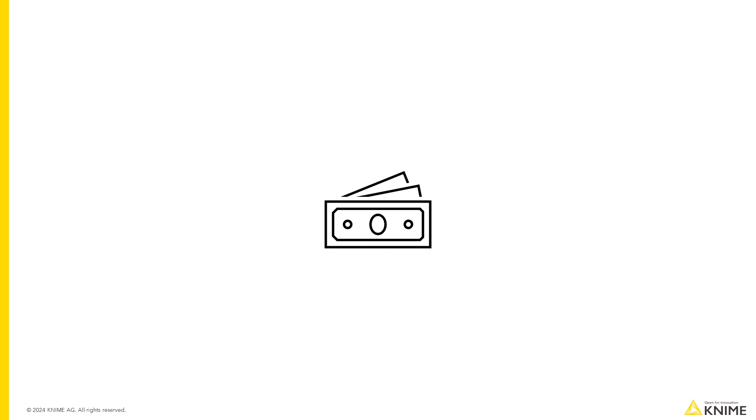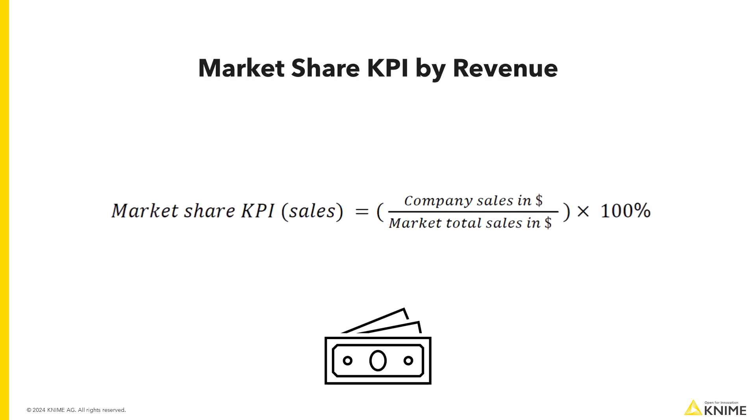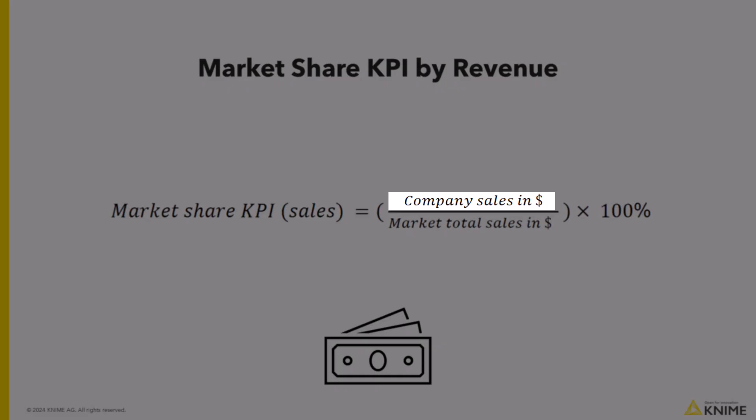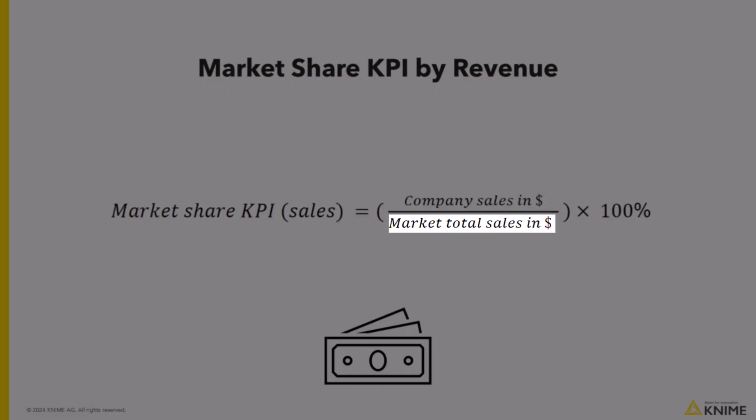Now, let's talk about calculating the market share KPI by sales revenue. You divide your company's sales by the total sales in the market and multiply by 100.